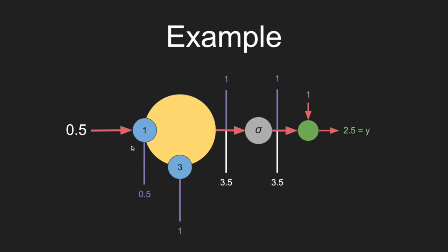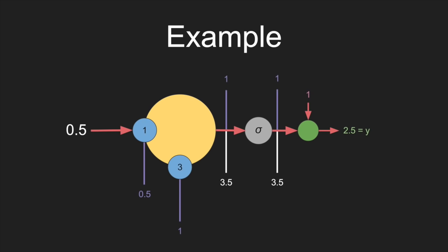We have now figured out all of the derivatives in this network for the error. We know that if we were to increase the weight by a little bit, the error would increase half as fast. But if we were to increase the bias, the error would increase at the same speed. Now I want to do a more interesting example.